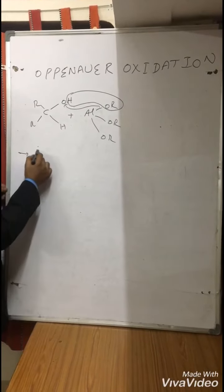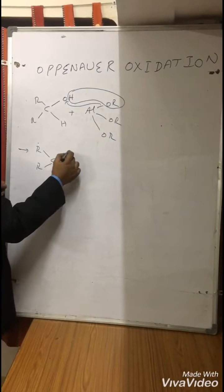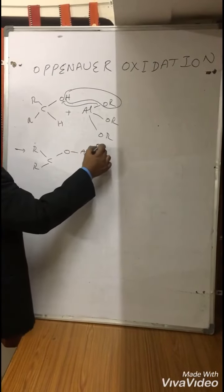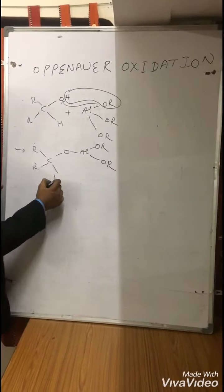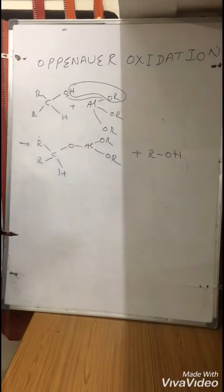Now once again, aluminum alkoxide, and this OR OH becomes alcohol. There again, two ORs and one aluminum.